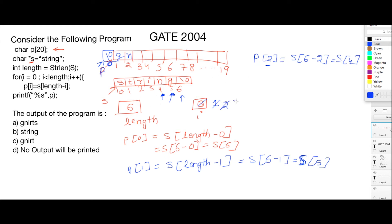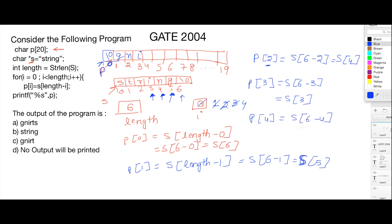Now i becomes 3, so p[3] = s[6 - 3] = s[3]. Whatever data is stored at location 3 is stored at location 3 in p, therefore 'i' is stored here. Now i becomes 4, and 4 is still less than length which is 6. So p[4] = s[6 - 4] = s[2]. Whatever is stored at index location 2 in the s array is stored at index location 4 in the p array, therefore 'r' is stored here.